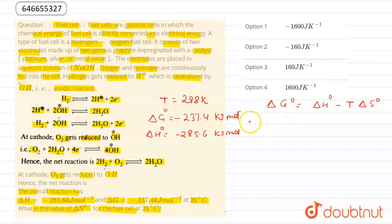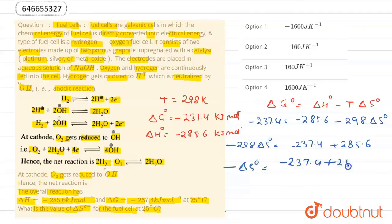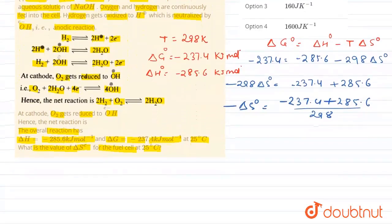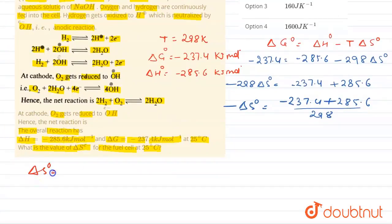Putting these values in the equation, we get -237.4 = -285.6 - 298 × ΔS°. Rearranging: -298ΔS° = -237.4 + 285.6. Therefore, -ΔS° = (-237.4 + 285.6)/298. On solving this equation, we get ΔS° = (237.4 - 285.6)/298.